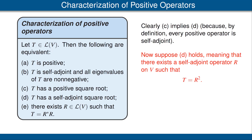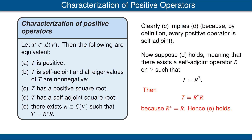Now for D implies E. Suppose D holds, meaning T has a self-adjoint square root — that is, there is a self-adjoint operator R such that T = R². Because R is self-adjoint, T = R² = R*R. Hence condition E holds, and we have proved D implies E.